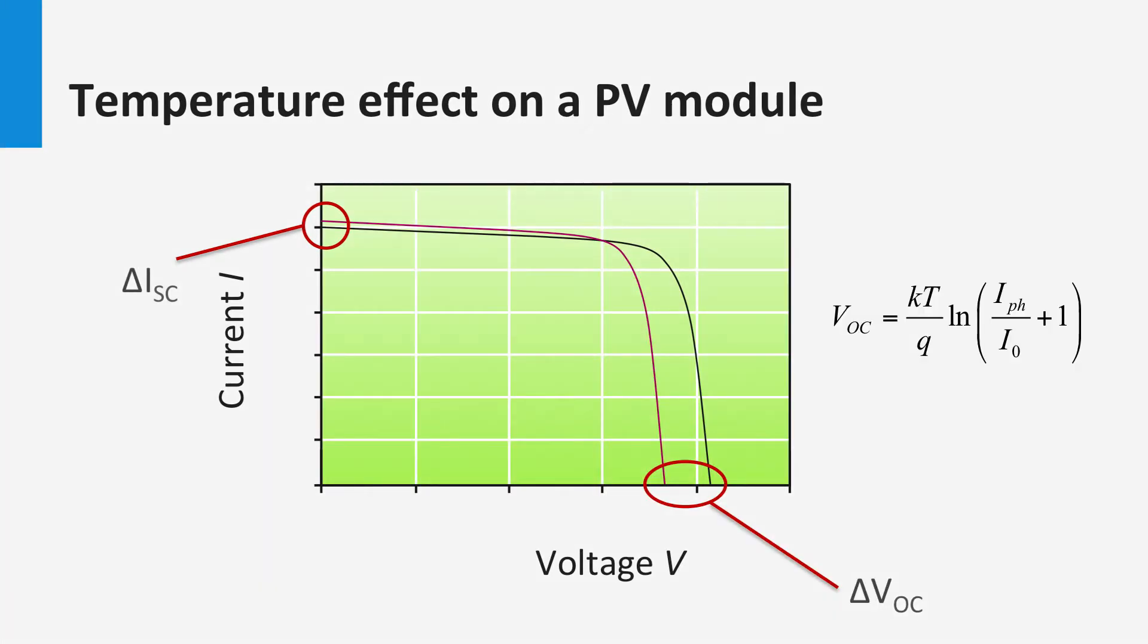The decreasing effect on voltage can be explained from this form of the basic diode equation seen in the earlier weeks. While the temperature affects the various terms in the equation, the net effect of temperature is that it decreases the open circuit voltage linearly.